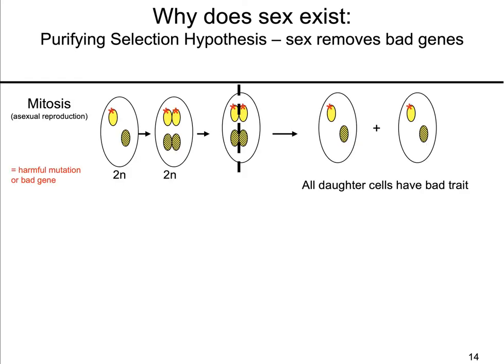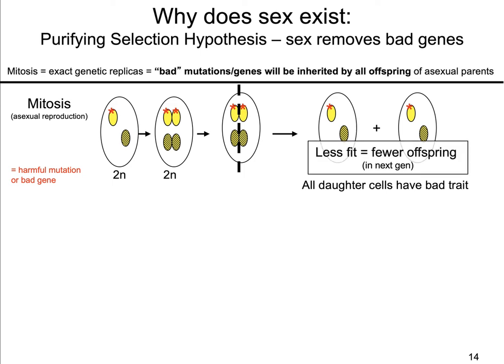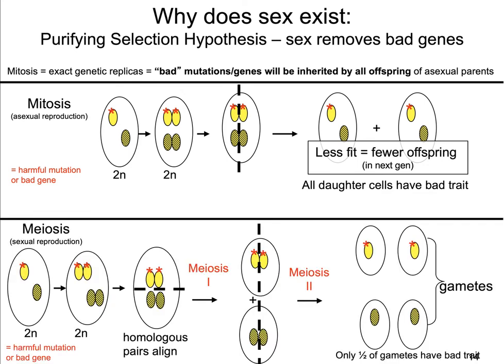The purifying selection hypothesis basically says sex exists because sex removes bad genes from a population. Imagine a population of individuals reproducing purely asexually via mitosis. If there's a harmful mutation — represented here by a star on a chromosome — and you follow those chromosomes through mitosis, all of the daughter cells produced are going to have that same chromosome and that same bad trait. Asexual reproduction guarantees a bad trait will be present in all individuals in that population.